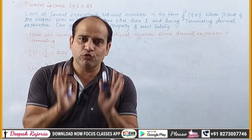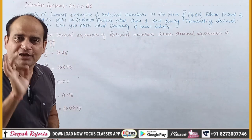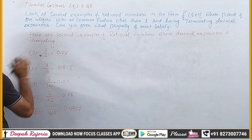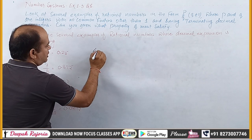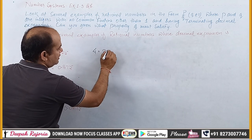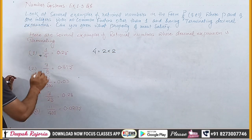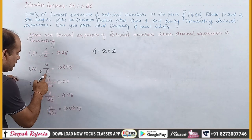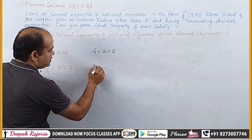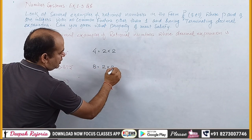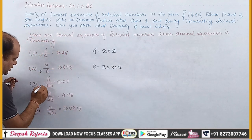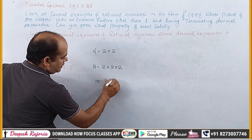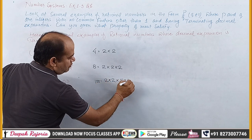तो अब आते हैं main part पर — Q के लिए हम लोग क्या property देख पाते हैं। यहाँ पर P upon Q की form में लिखे गए number में Q की जगह पर 4 है, और जब हम लोग इस 4 को prime factorize करें तो इसको लिख सकते हैं 2 × 2। अगले number में Q की जगह 8 है, और इसका prime factorization होता है 2 × 2 × 2। आगे Q की जगह 100 है, और इसका prime factorization है 2 × 2 × 5 × 5।